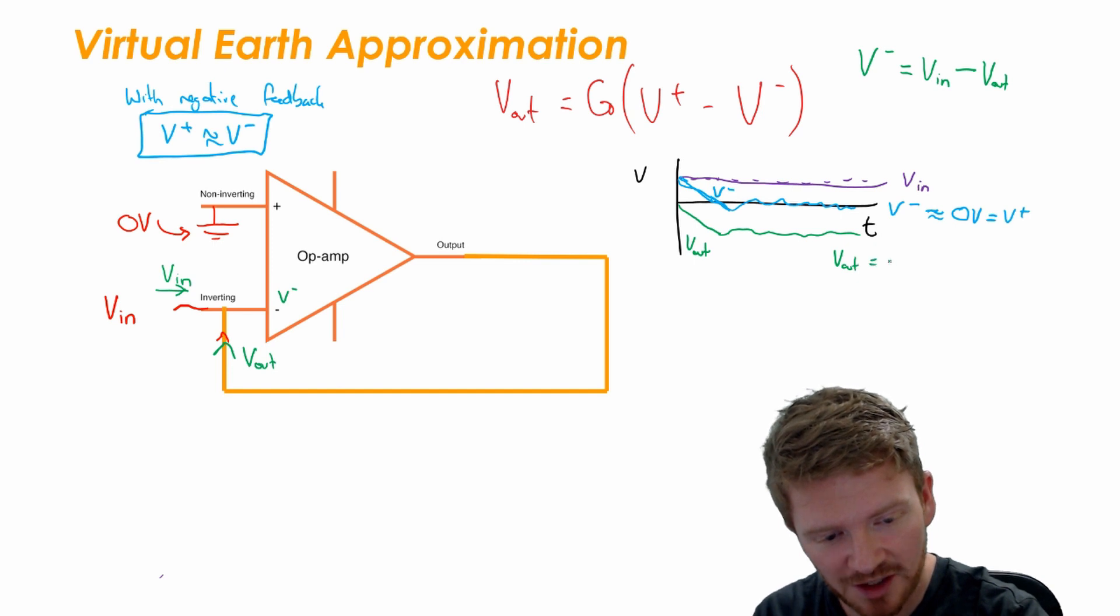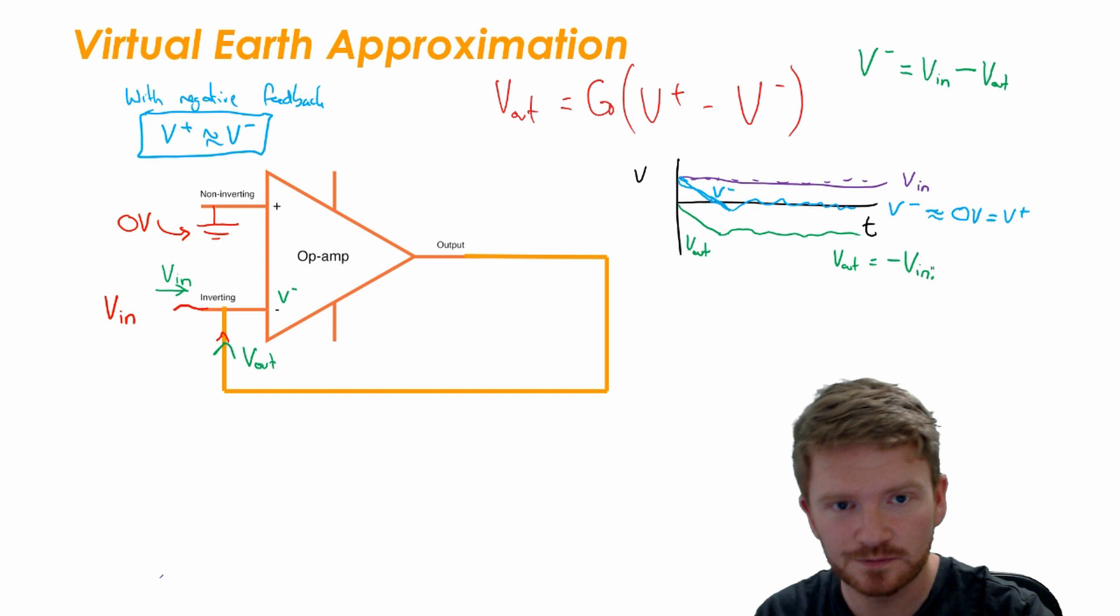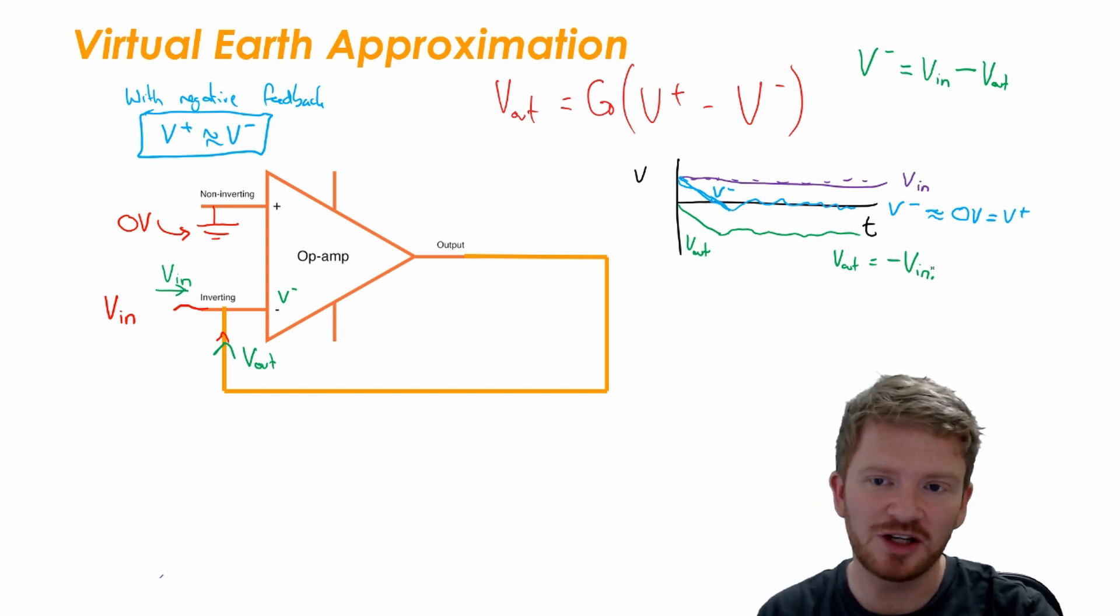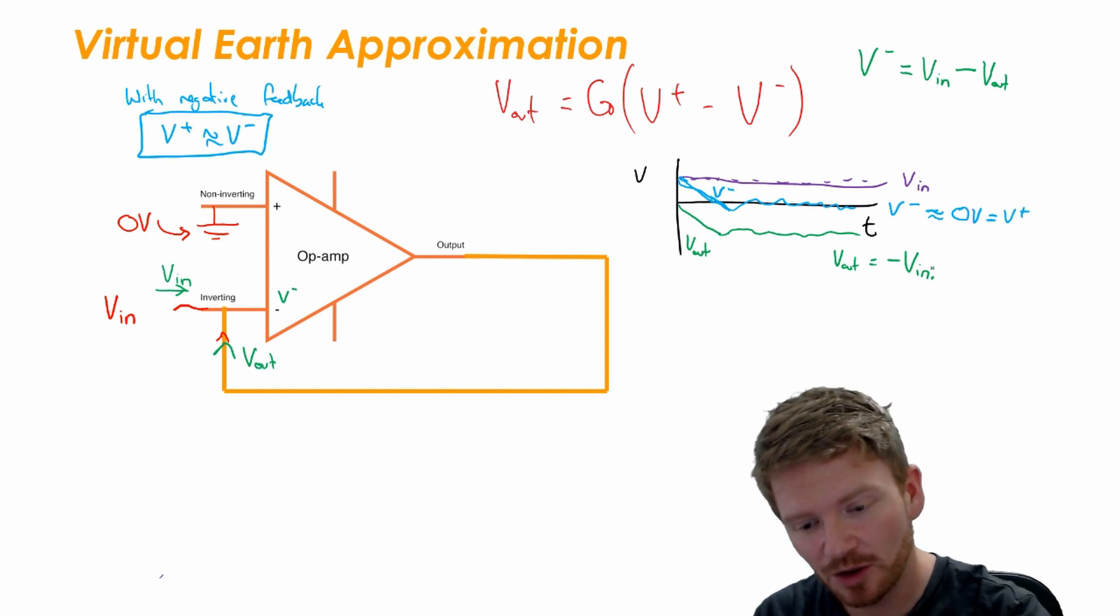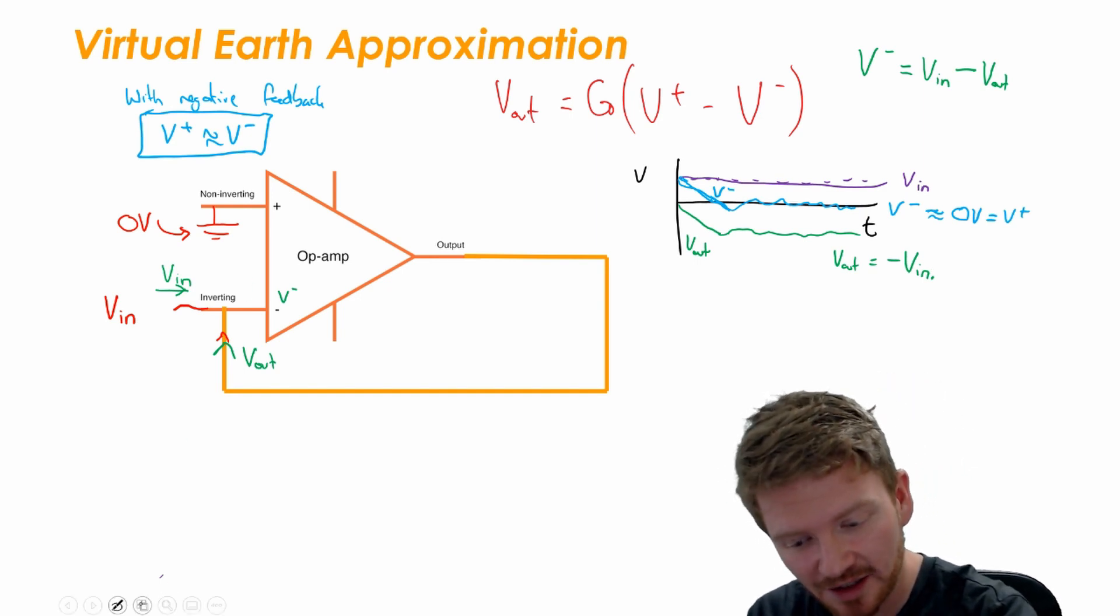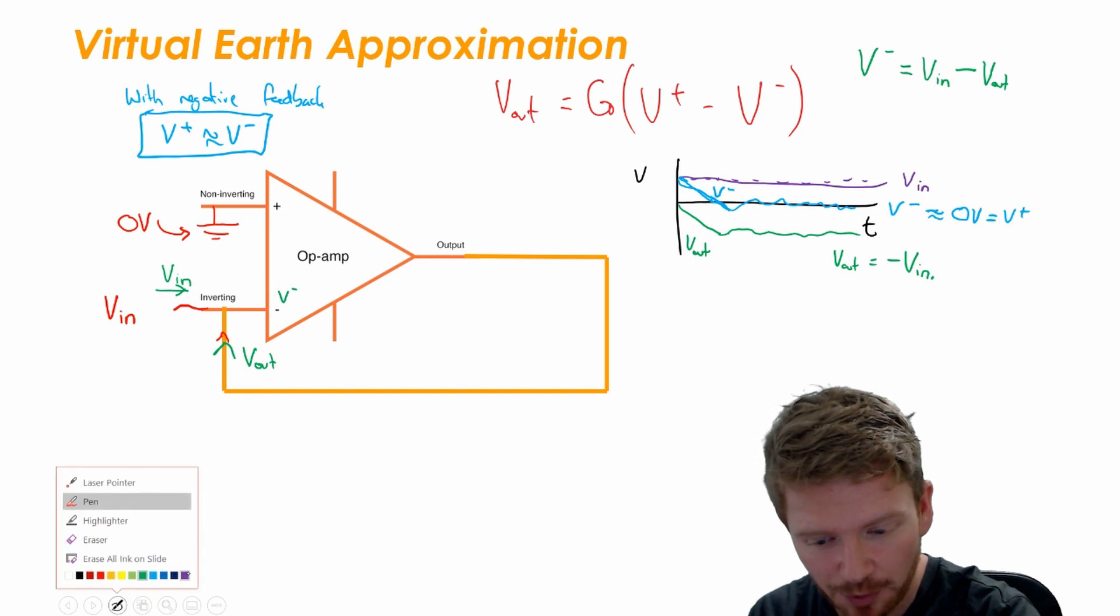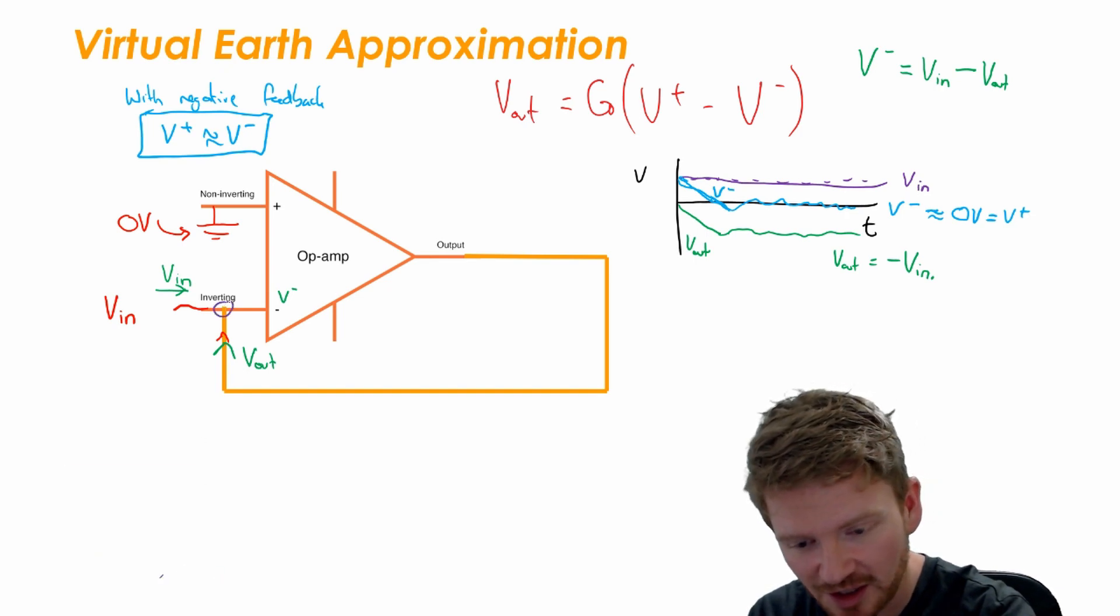Now the virtual earth approximation is just a special case of negative feedback. It's exactly the same as what we did earlier in this lesson, but this time we are using the idea that there is a point in the circuit here, I'm going to call point P.